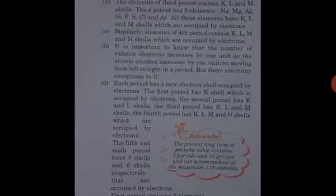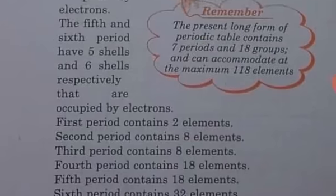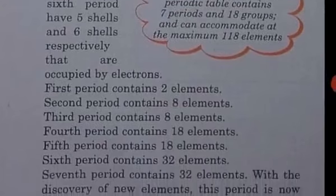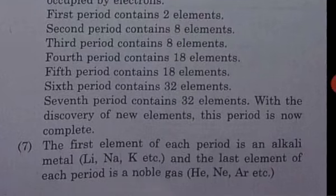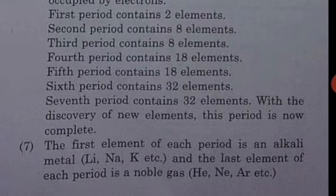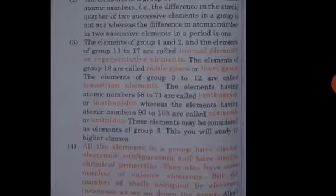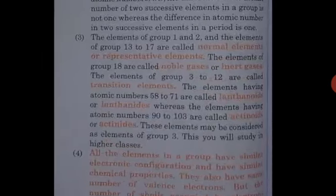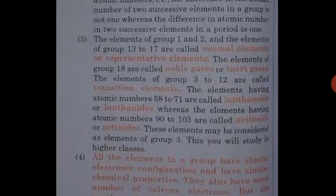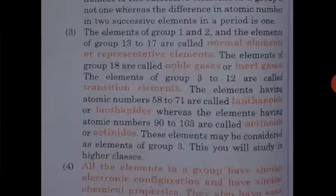The fifth and sixth periods have the fifth and sixth shells respectively. The first period contains 2 elements, the second period contains 8 elements, the third period also contains 8 elements, the fourth period contains 18 elements, the fifth period also contains 18 elements, the sixth period contains 32 elements, and the seventh period also contains 32 elements.